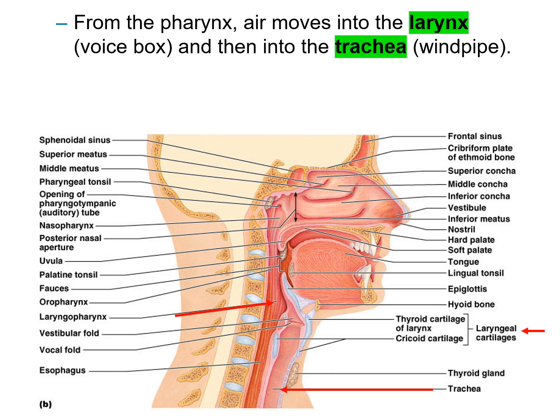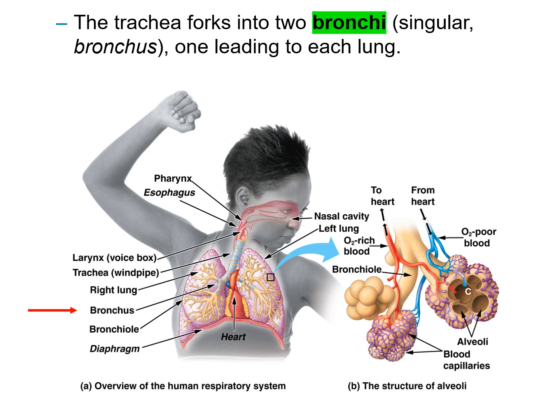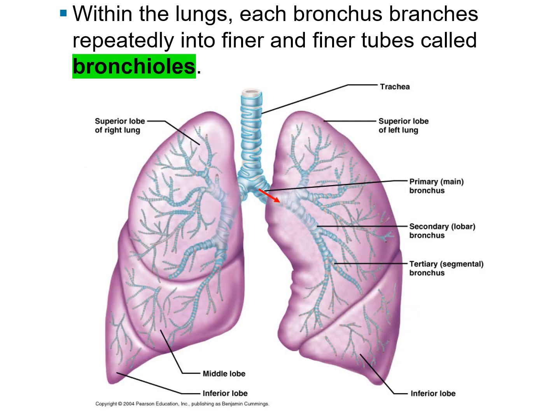From the pharynx, air moves to the larynx, also called the voice box, and then into the trachea, also referred to as the windpipe. The trachea then forks into two tubes called the bronchi — one going to the left lung and one to the right lung. The bronchi then branch even further into what are called bronchioles, as seen in the branching patterns in the picture.